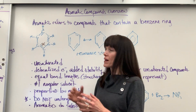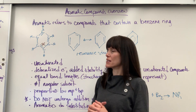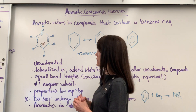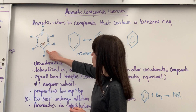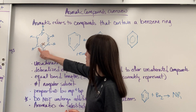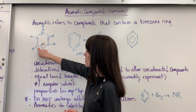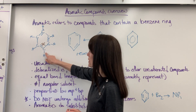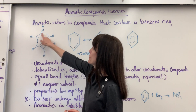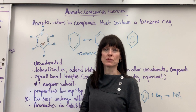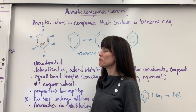It's going to have a trigonal planar geometry, which means it's all in one plane — that's part of its significance. Each carbon is bonded to another carbon with a single bond and another carbon with a double bond, so every carbon therefore has one hydrogen.